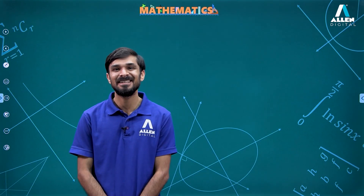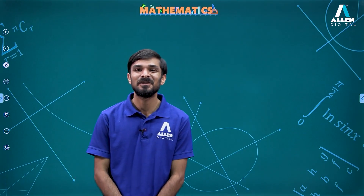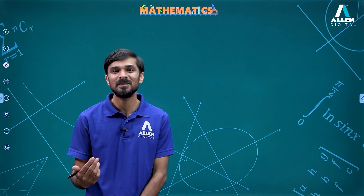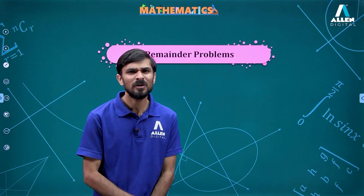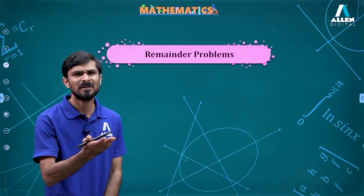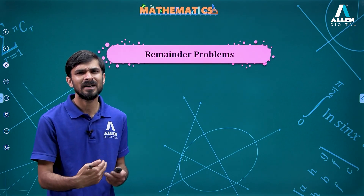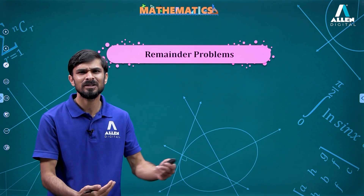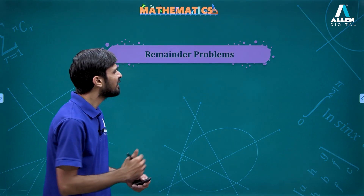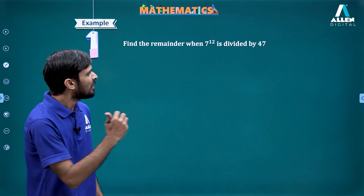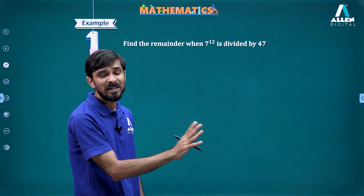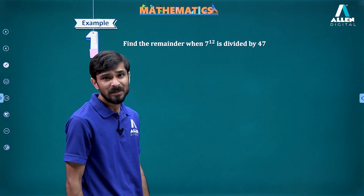Hello everyone, welcome to Island Digital. Today we are going to look at how we can use the binomial theorem in remainder problems. You must have encountered problems where something to the power of something is divided by another number, and you are asked to find out the remainder. For example, 7 to the power 12 is divided by 47, and we need to find the remainder.